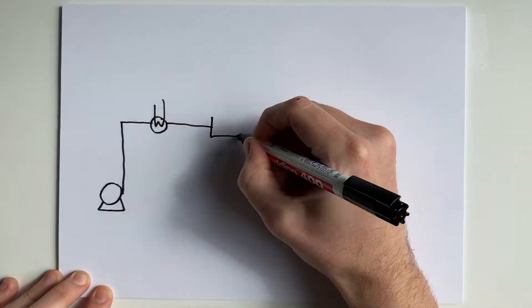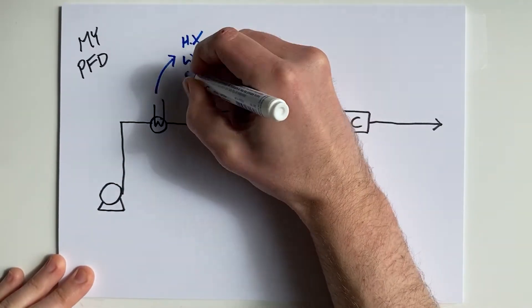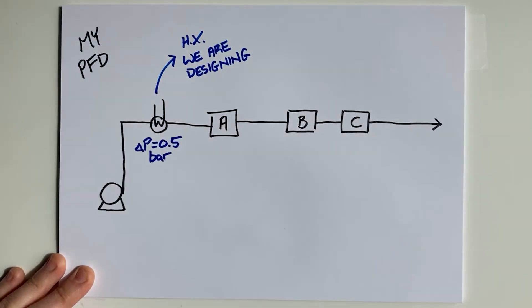You can think of it as a pressure drop budget exercise. You cannot spend more than you've been given in your budget. They have said to you: okay, great, you're designing my heat exchanger — I'm giving you half a bar worth of pressure drop budget at our design flow rate. If you design and you use all those equations to find out that the pressure drop of the heat exchanger is actually one bar, well, realize that that extra half a bar needs to come from somewhere.